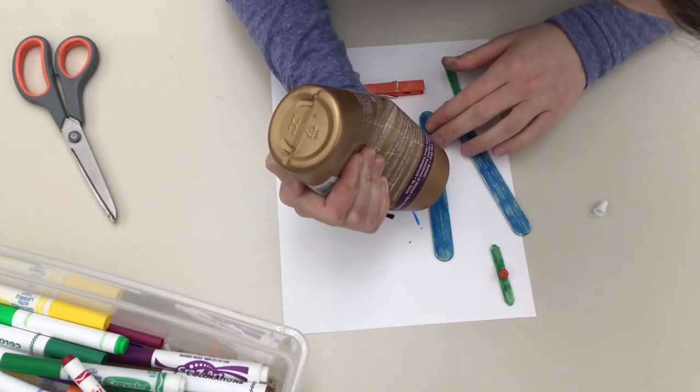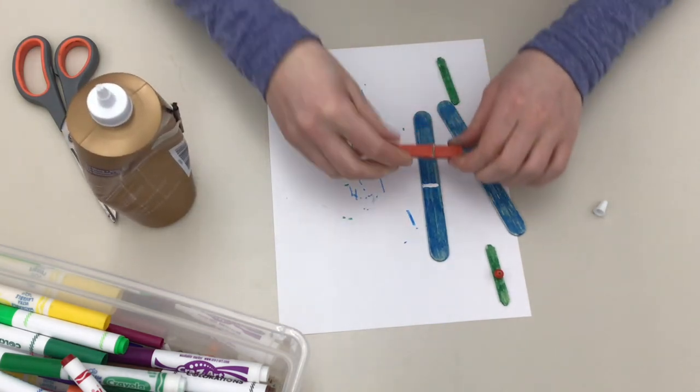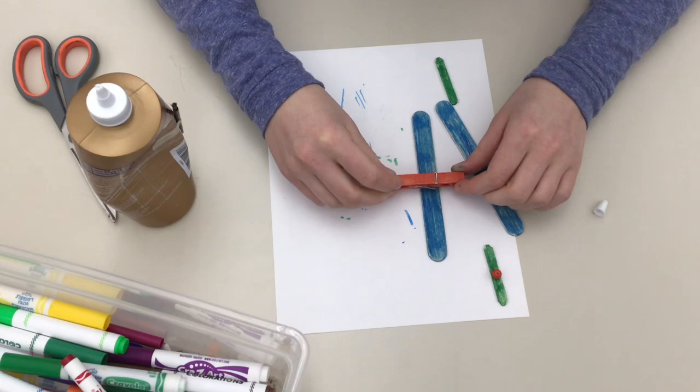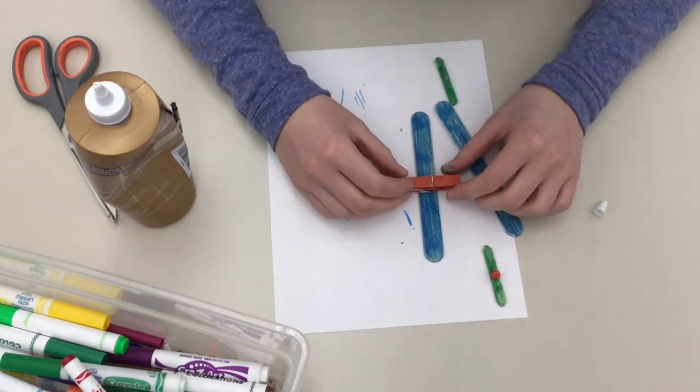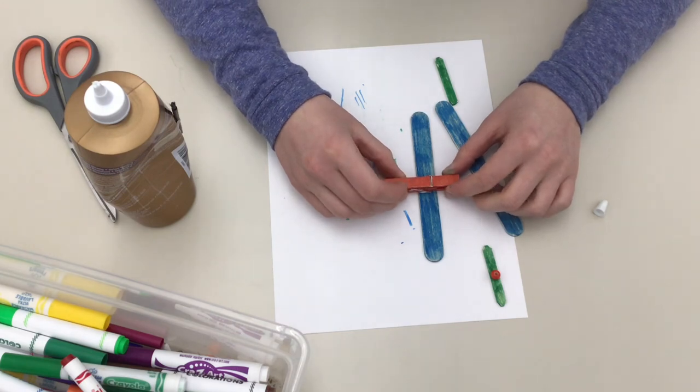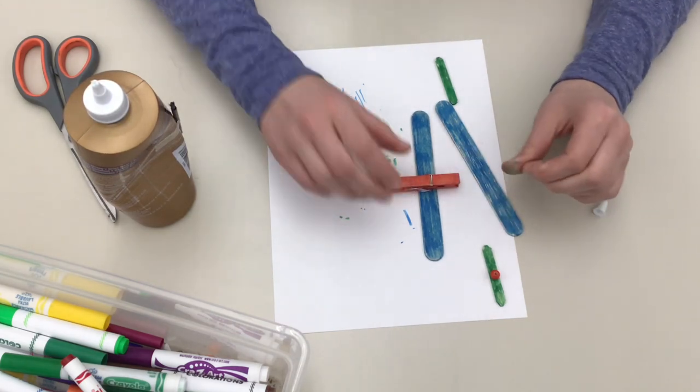So grab your glue and put a line down the middle of one of your big craft sticks that's going to make your wings. And then grab your clothespin and set it right on there. You want the metal line of the clothespin to be just inside of the edge of the craft stick. And then just make sure it's lined up the way you want and square.